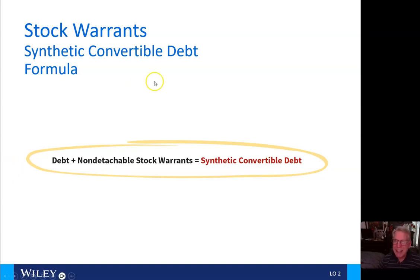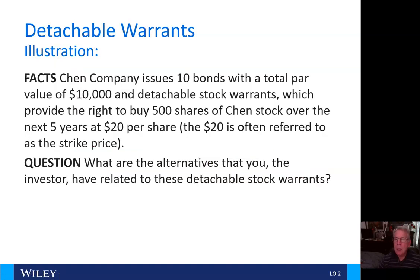Now, the synthetic convertible debt formula: debt plus the non-detachable stock warrants equals your synthetic convertible debt — a new definition and formula. Let's take a look at an illustration. Chen Company issues 10 bonds with a total par value of $10,000 and detachable stock warrants, which provide the right to buy 500 shares of Chen stock over the next five years at $20 per share.